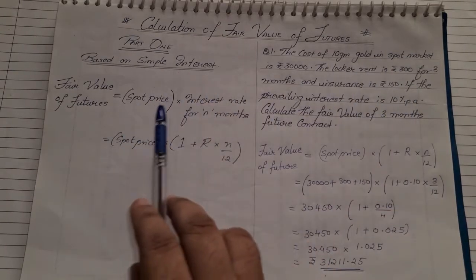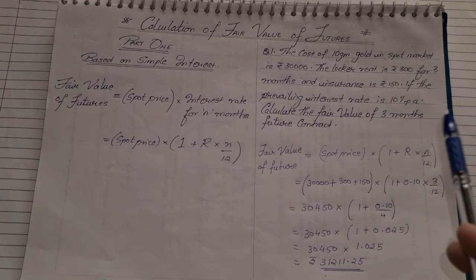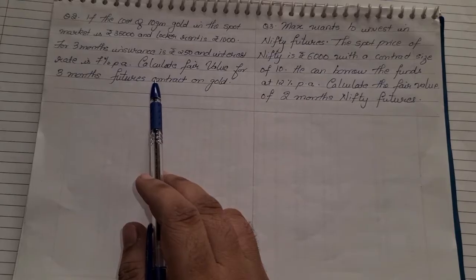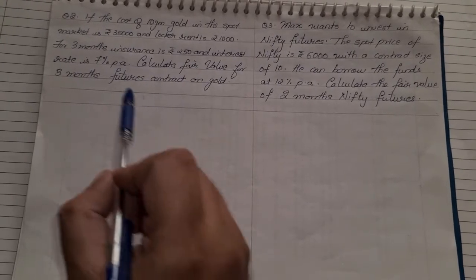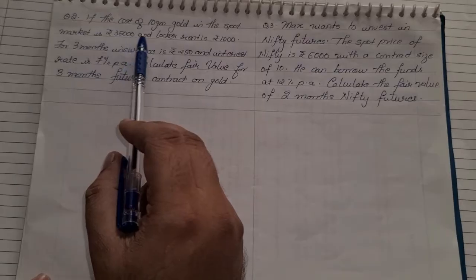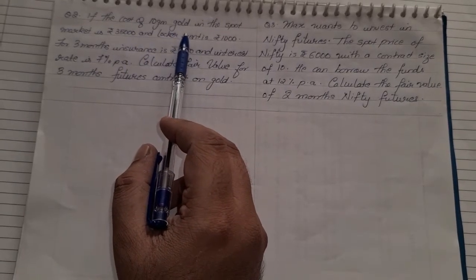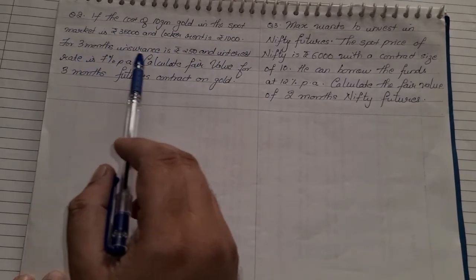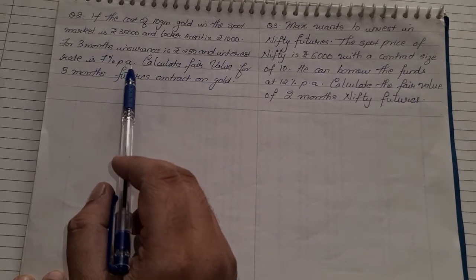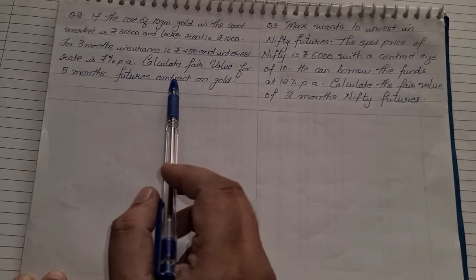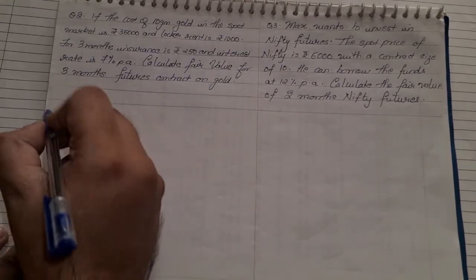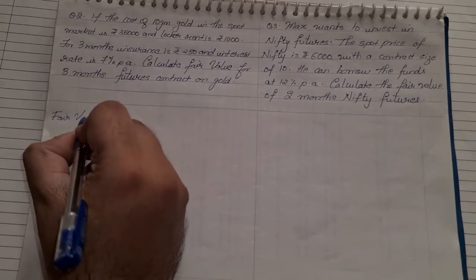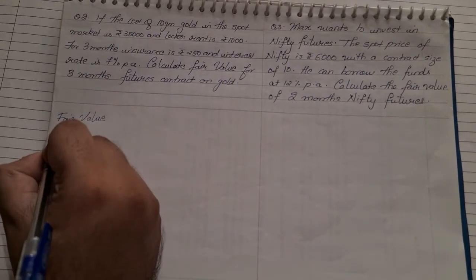This was the first sum based on simple interest. Now we take up the second question: the cost of 10 gram gold in the spot market is ₹35,000, the locker rent is ₹1,000 for three months, insurance is ₹250, and interest is 7% per annum. Calculate the fair value for a three-month future contract on gold.